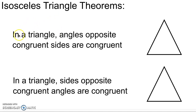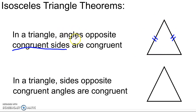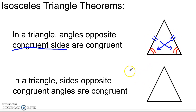Up on the top here we have the first one: in a triangle, angles opposite congruent sides are congruent. So what this is saying is that if we have a triangle and we know that two of the sides are congruent, then the angles opposite them — down in this direction and down in this direction — also have to be congruent. In earlier grades you called these the base angles of the isosceles triangle.